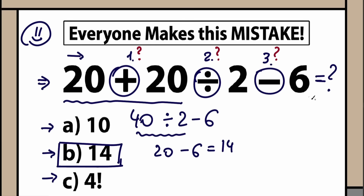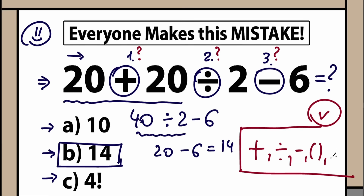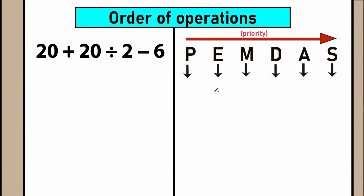We can easily determine the one correct answer using a really important part of math: order of operations. And why is order of operations extremely important here? Because we have addition, division, and subtraction — and we could also have parentheses or multiplication. We need to order all of these operations. For that, we use an acronym: PEMDAS order of operations. This order tells us what to do first — parentheses first, exponents first, and so on. When we learn it, we can easily find the correct answer.